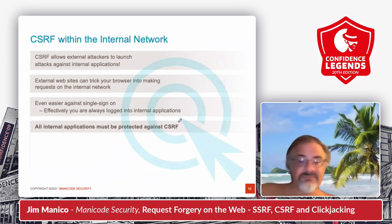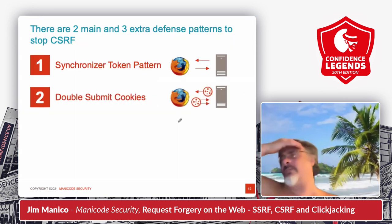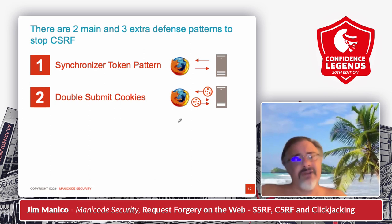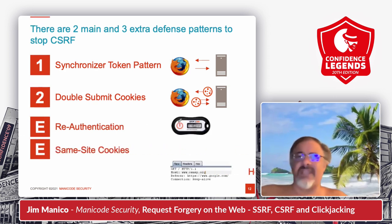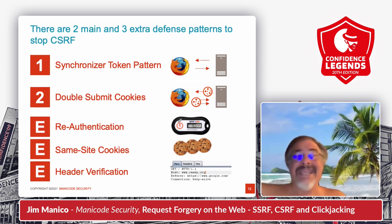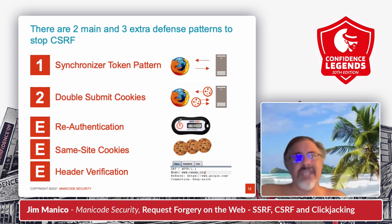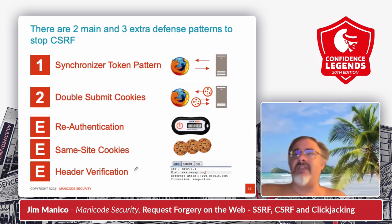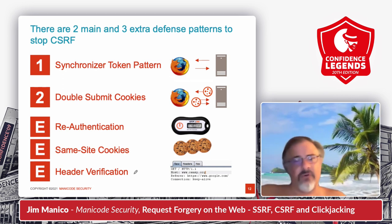This is bad. The way we stop cross-site request forgery is with two main patterns: the synchronizer token pattern for a web app, or the double submit cookie pattern for a stateless API. We also have defenses like re-authentication — making the user log in again before finishing a transaction. We also have same-site cookies, which is a standard on the web that helps defeat request forgery. And the browser automatically sends request headers like Origin or Referer, which we can verify to stop request forgery as well.